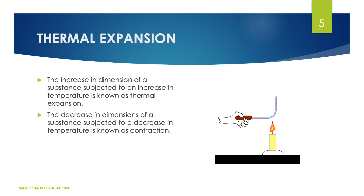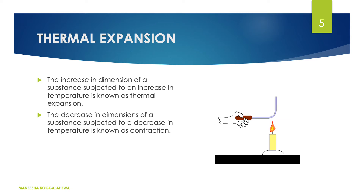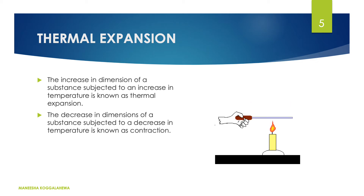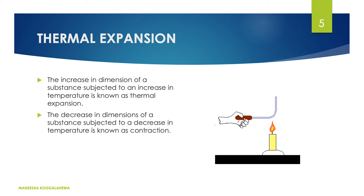Now thermal expansion. In my example you can see the iron rod is being heated by a flame. When the temperature of the iron rod increases, you can see that the length of the iron rod gradually increases — that is thermal expansion. The increase in dimension of a substance subject to an increase in temperature is known as thermal expansion. Then thermal contraction is the decrease in dimension of a substance subject to a decrease in temperature. When we gradually decrease the temperature of an object, its dimension will gradually decrease.